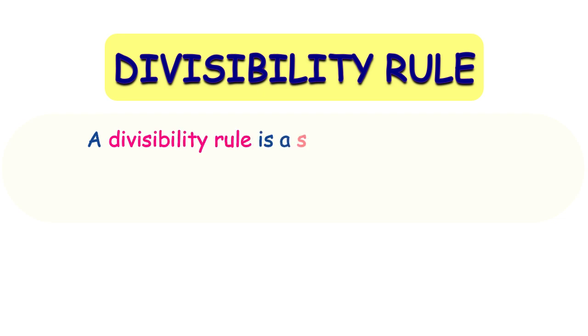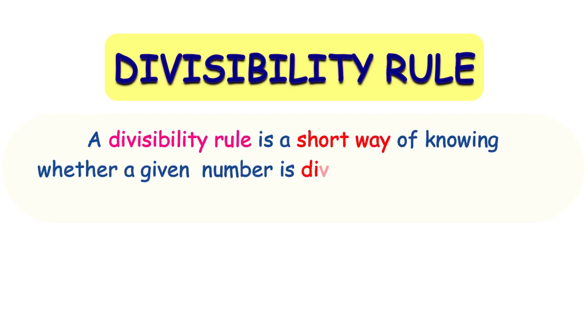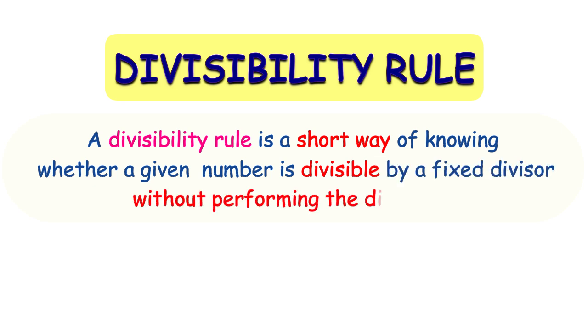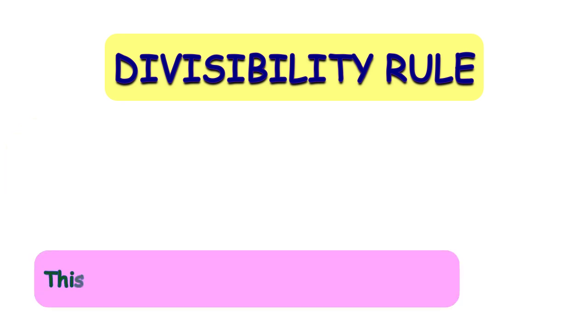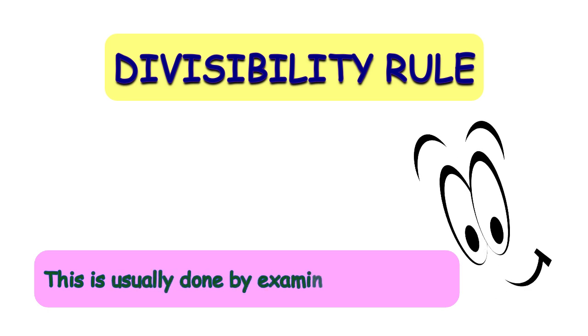Divisibility rules will help us determine if these big numbers are divisible by 4, 8, 11, and 12. What is a divisibility rule? A divisibility rule is a short way of knowing whether a given number is divisible by a fixed divisor without performing the division. This is done by examining the digits.